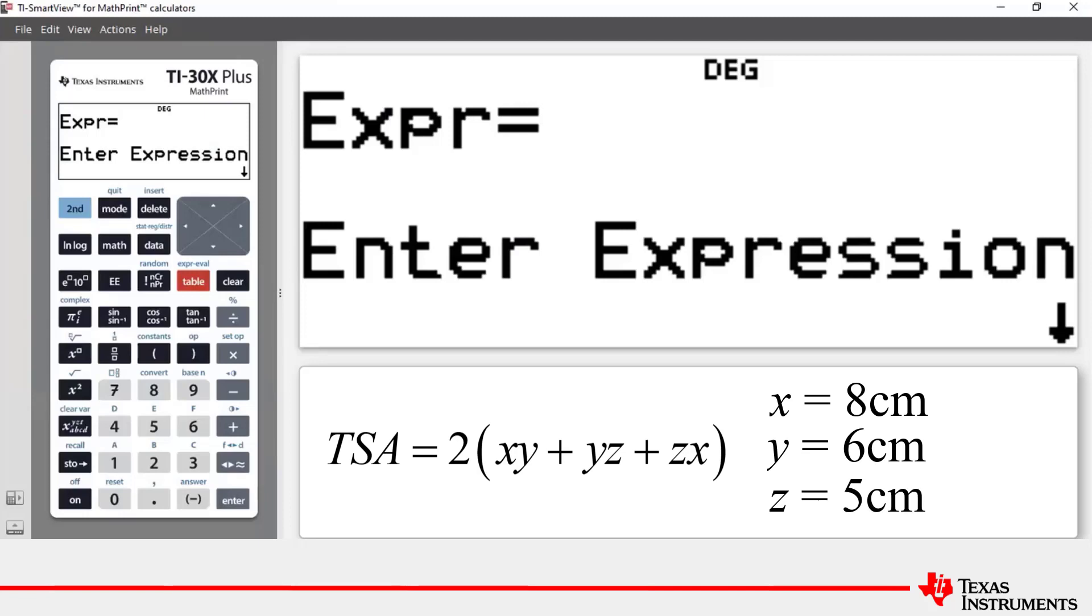Now the formula for the total surface area is given by two outside of three products added together: xy plus yz plus zx, where I've defined x to be the length of the cuboid, y to be the width, and z to be the height.